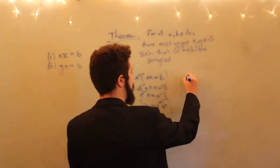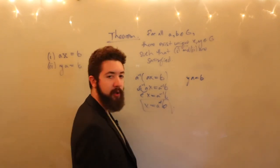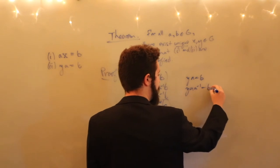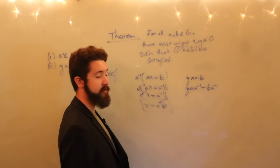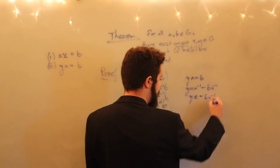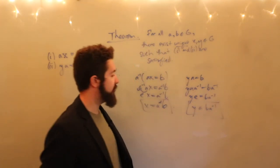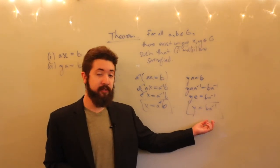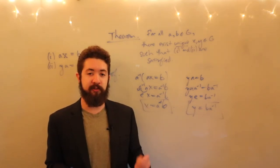Likewise, if YA equals B, we multiply both sides on the right by A inverse: YA A inverse equals B A inverse. The generalized associative law lets us drop explicit parentheses, so this becomes YE equals B A inverse, or Y equals B A inverse. This is a unique element in G, since G is closed with respect to the operation star.